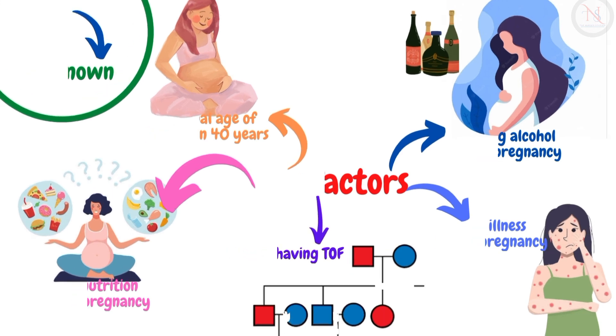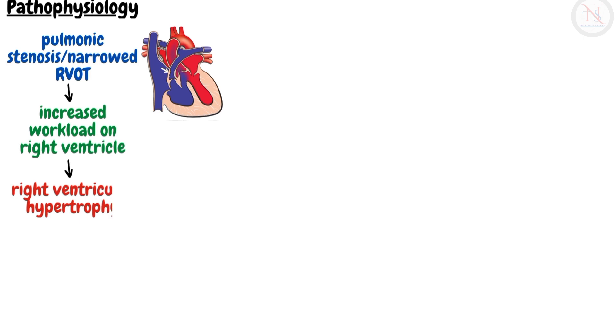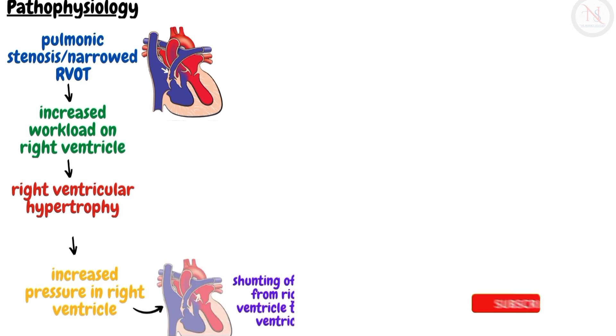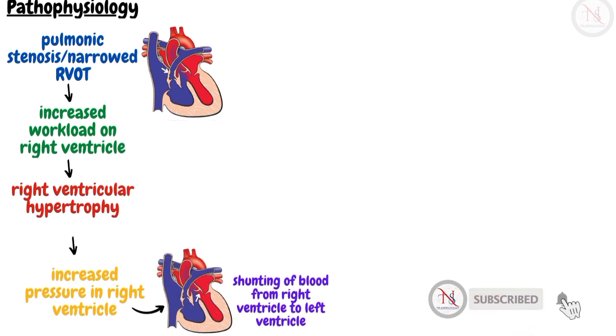In the pathophysiology of tetralogy of Fallot, deoxygenated blood returns to the right atrium and flows into the right ventricle. The outflow of blood from the right ventricle to the lungs is restricted due to the narrowing of the pulmonary valve — pulmonic stenosis — making the right ventricle push harder, ultimately causing right ventricular hypertrophy. This leads to increased pressure inside the right ventricle, which forces blood to shunt from the right ventricle to the left ventricle through the VSD.